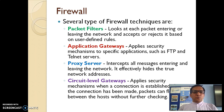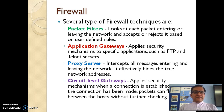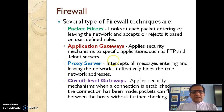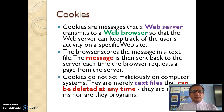The proxy server effectively hides the true network addresses. The last type is circuit-level gateways, which applies a security mechanism when a connection is established. Once the connection has been made, packets can flow between hosts without further checking — so it is essentially an entry-level check.